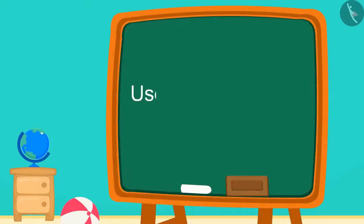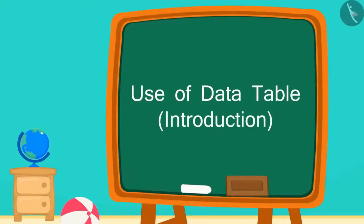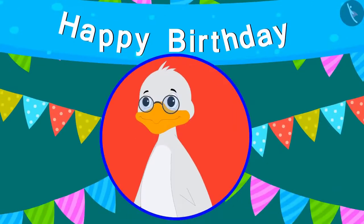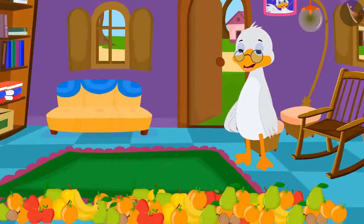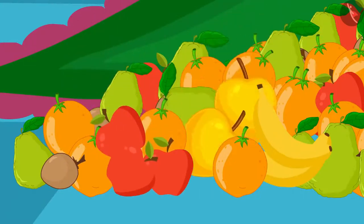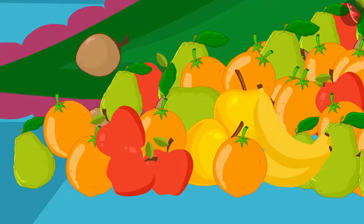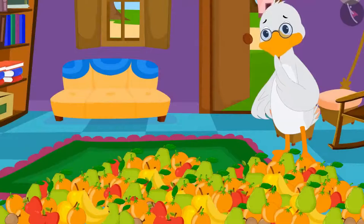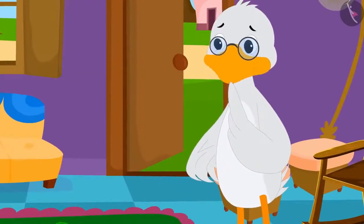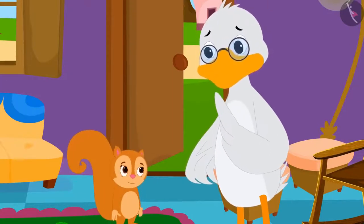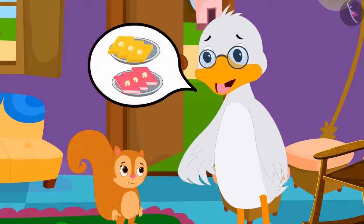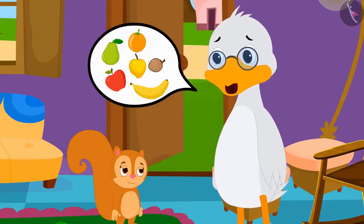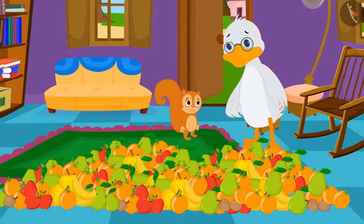Children, today we will learn about the use of a data table. Today is Badbole Uncle's birthday and all friends are going to come to the party. Uncle has bought a lot of fruits — apples, mangoes, bananas, oranges, guava, and chikku. But Uncle looks upset. Chanda has come to Uncle's house to help him, and she asked why he is upset.